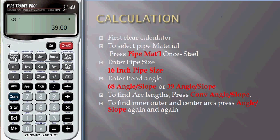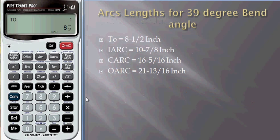To find the arc lengths, just press Convert, Angle of Slope. We need to find TO equals 8 and 1/2 inch.